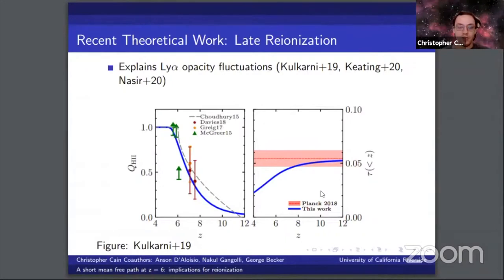Measurements of the mean free path can also distinguish between these models because you expect different mean free paths depending on how much neutral gas there is in the IGM.